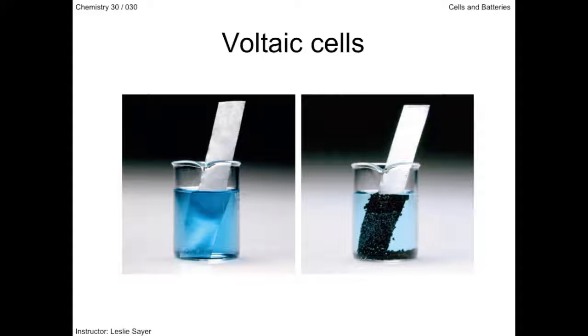Now instead of having the electrons transfer directly from the zinc metal to the copper ions in the solution, a voltaic cell separates the two half reactions, connecting them only by a conducting wire. The electrons pass from the zinc to the copper ions by way of the wire.